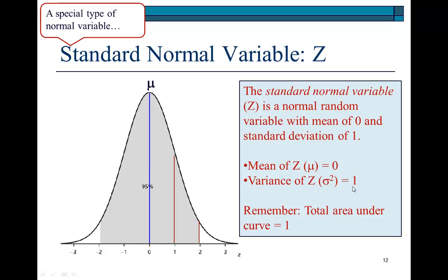Actually, its variance is 1, and if variance is 1, then of course, standard deviation, which is the square root of the variance, would also be 1.